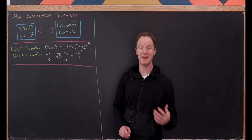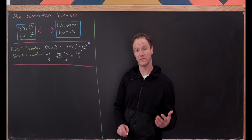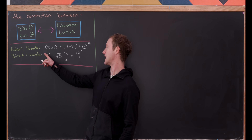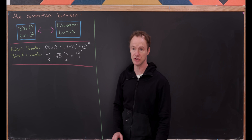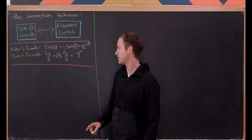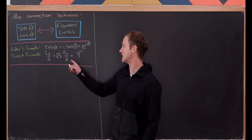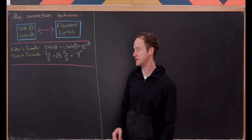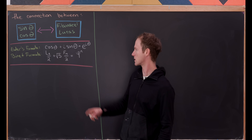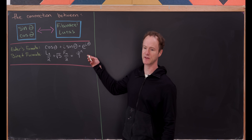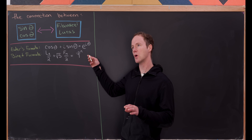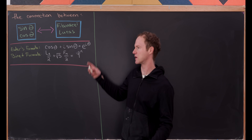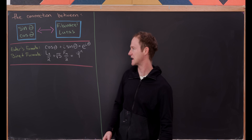A version of Binet's formula for Fibonacci and Lucas numbers says that the nth Lucas number over two plus the square root of five times the nth Fibonacci number over two is equal to the golden ratio to the nth power. Let's sketch how this goes — we won't go all the way from the ground, but we'll go from a starting point which I think is familiar.